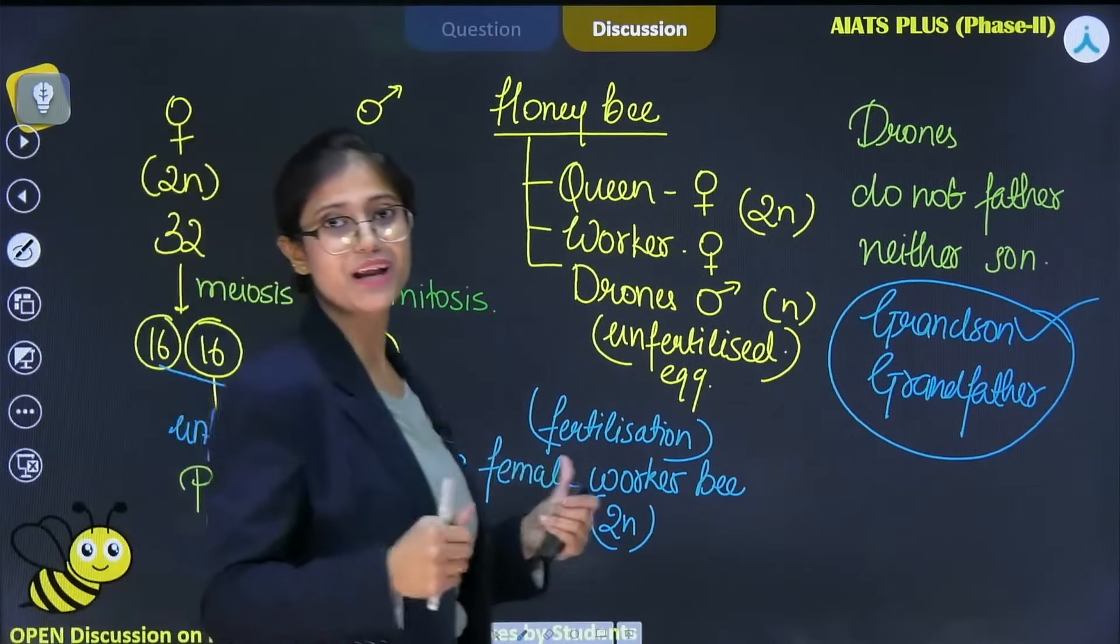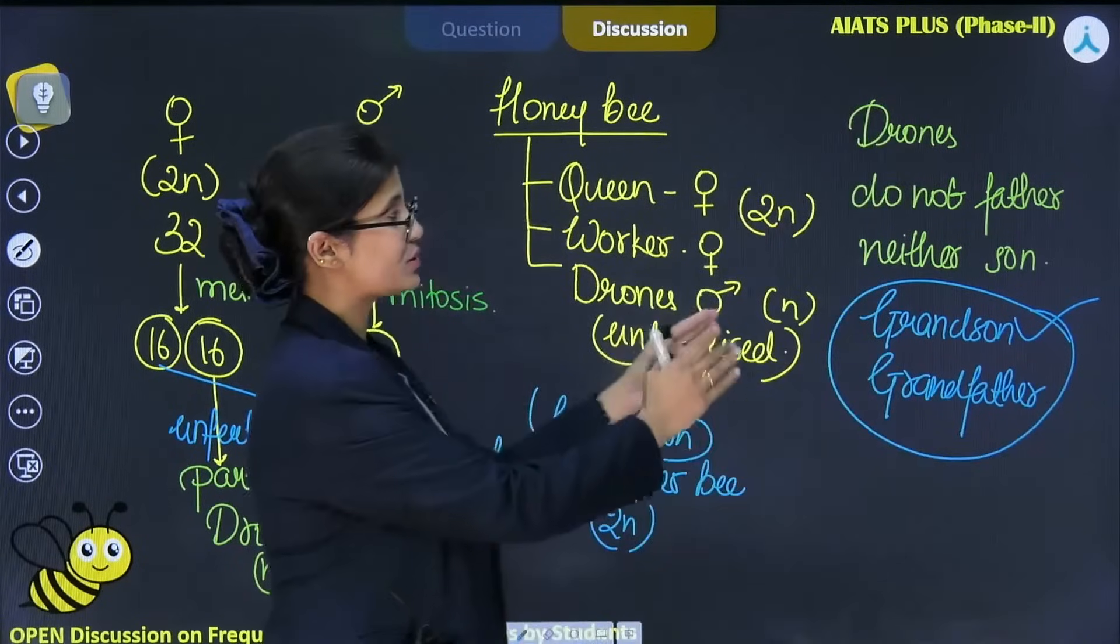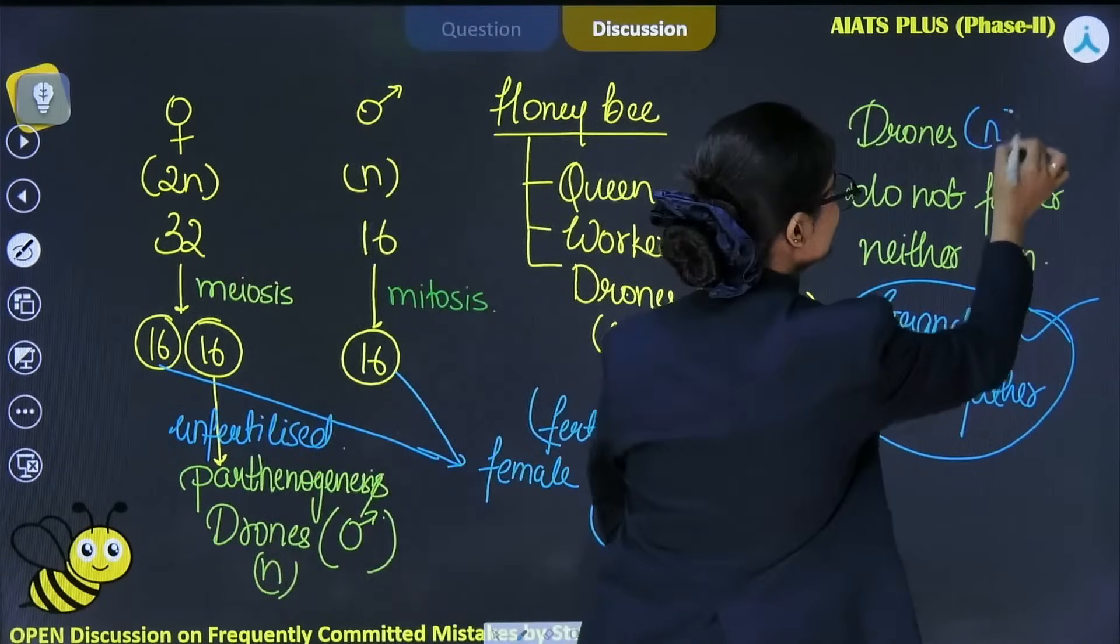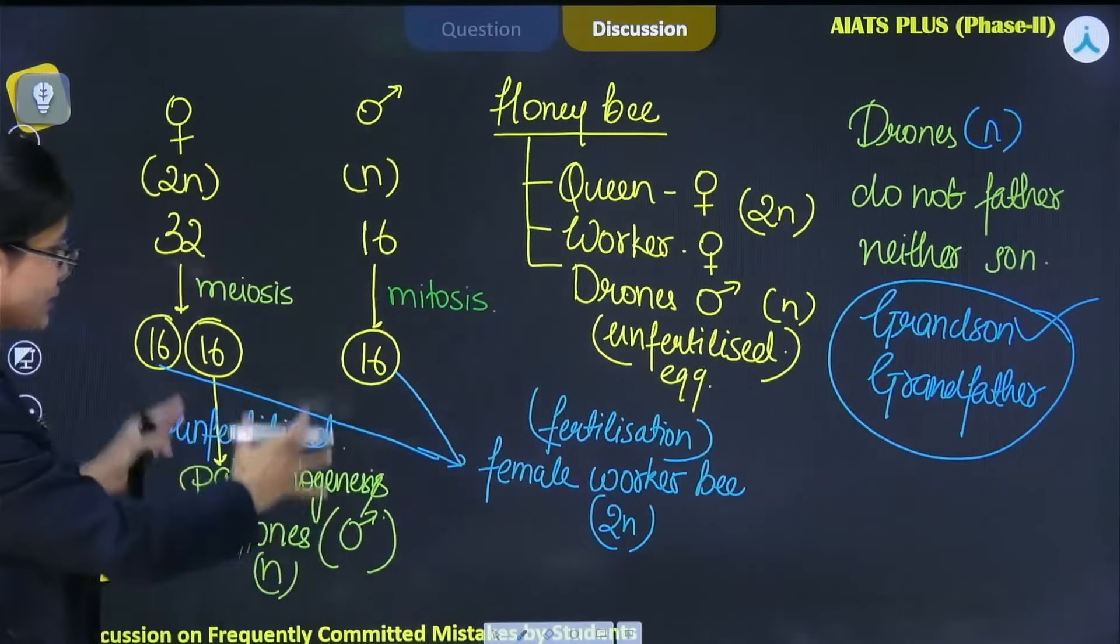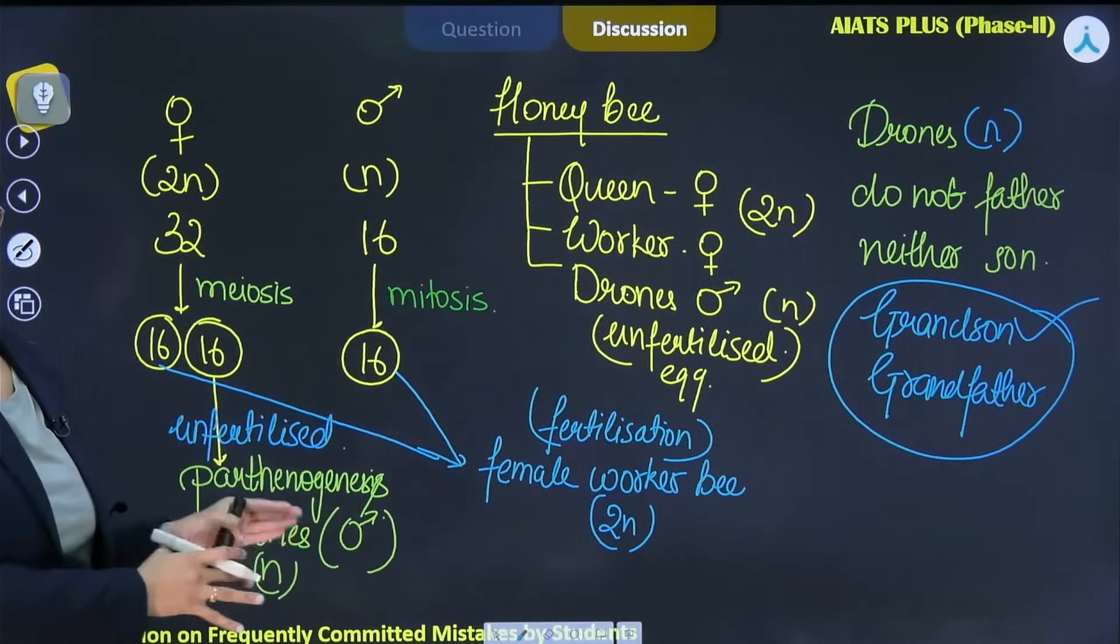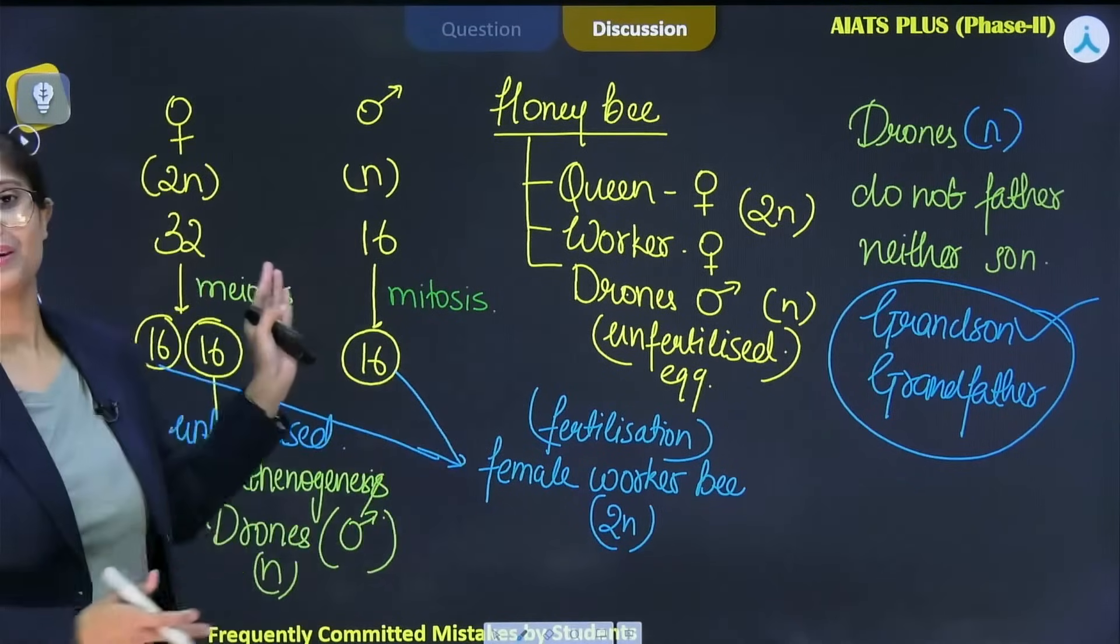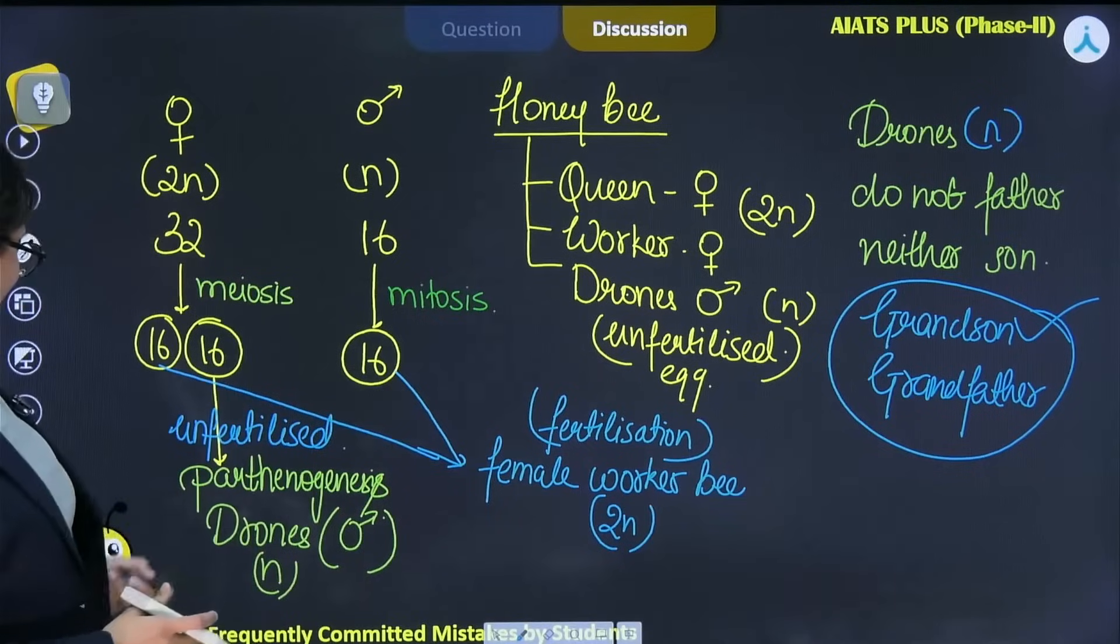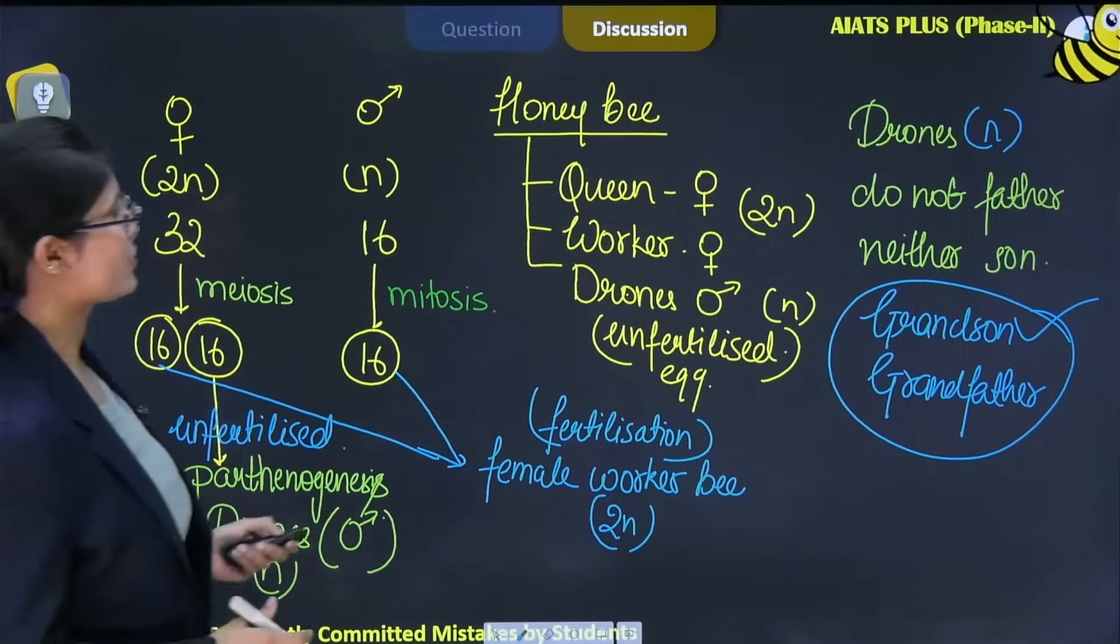This statement has been asked in the NEET exam previously. So, please remember that drones which are haploid in nature do not have father, neither have son but they have grandson and grandfather. If you proceed further that how they are not formed by the process of fertilization, that's why they don't have father. They are only having mother. Like this way and here there is one beautiful wasp which is roaming here.